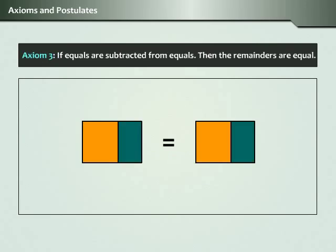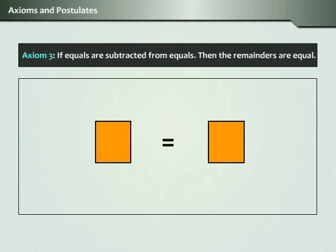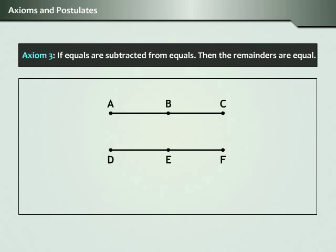Axiom 3: If equals are subtracted from equals, then the remainders are equal. For example, suppose you have two line segments AC and DF of equal length. Remove BC from AC and EF from DF respectively. If BC equals EF, then it implies that AB equals DE.